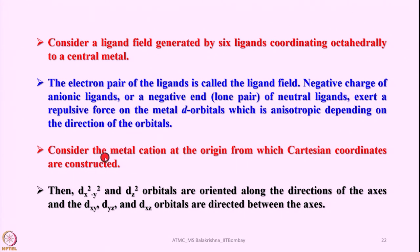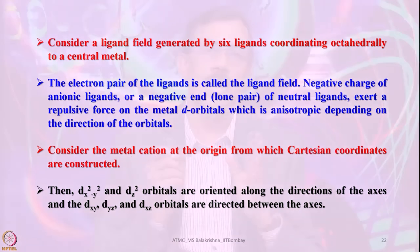Consider the metal cation at the origin of Cartesian coordinates — x, y, and z axes extending in both directions: +x and -x, +y and -y, +z and -z. Place the metal atom at the origin, and also place all 5 d orbitals at the origin to analyze their relative orientation.